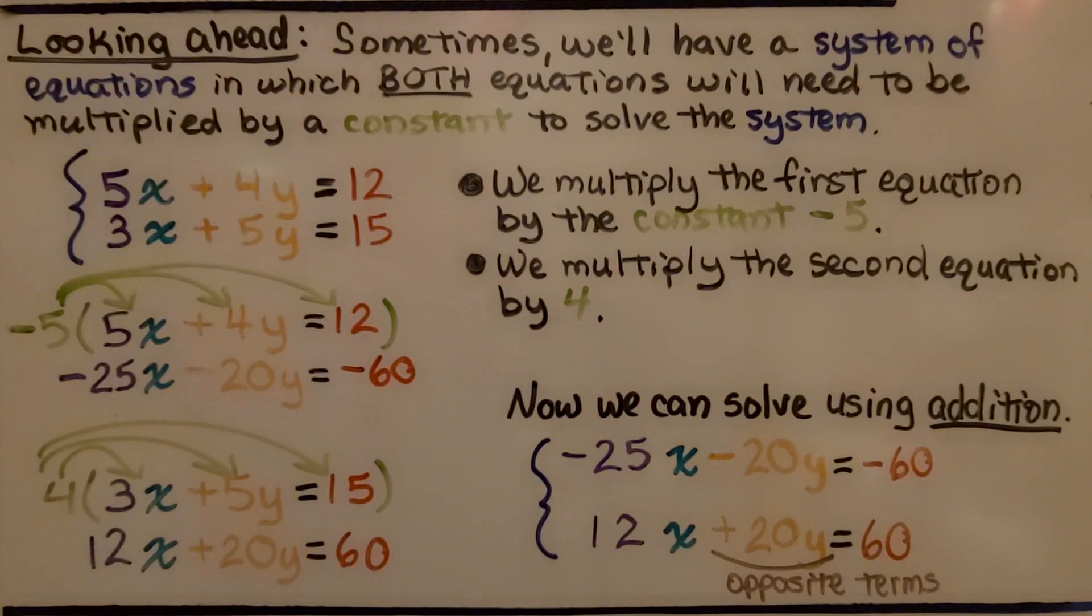I wanted to show you this real quick. This is looking ahead in algebra. Sometimes we'll have a system of equations in which both equations will need to be multiplied by a constant to solve the system. Looking at this system of equations, we don't have any opposite terms, and we don't have any same terms. In order to make them opposites so that we could solve with addition, we need to make this a negative and that a positive or make this a negative and that a positive, but they need to be the same coefficient, negative or positive.